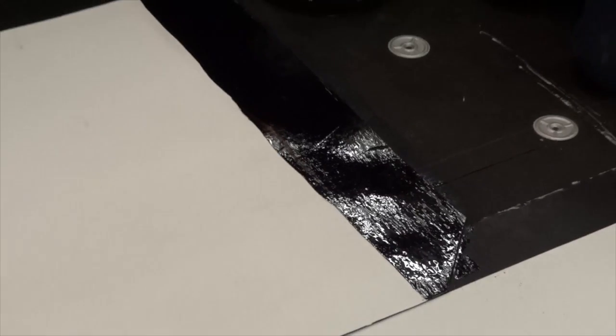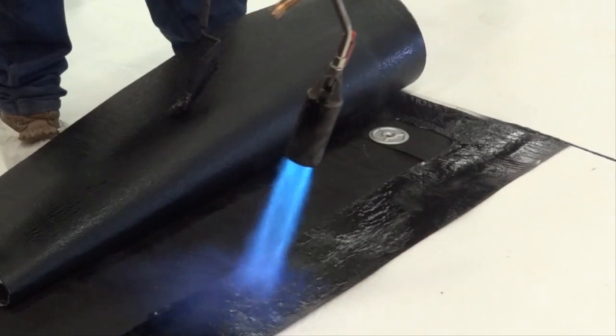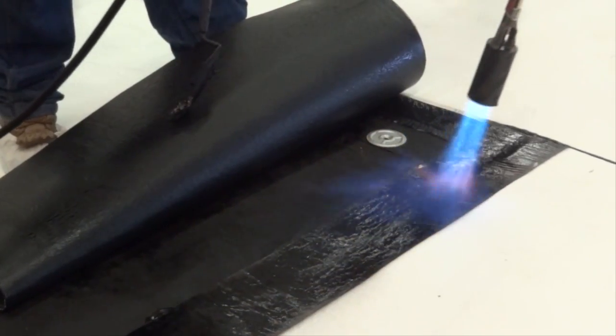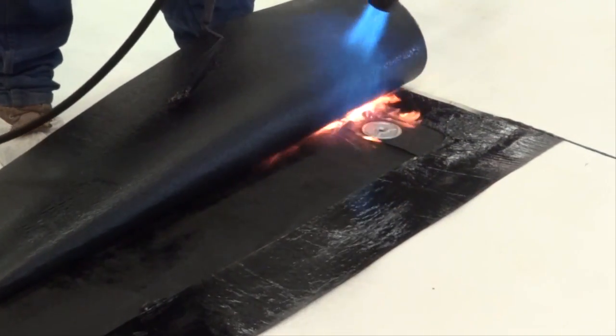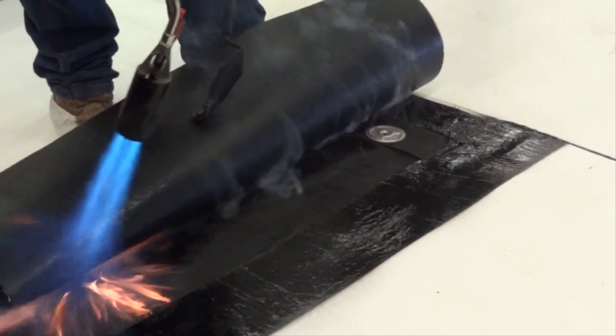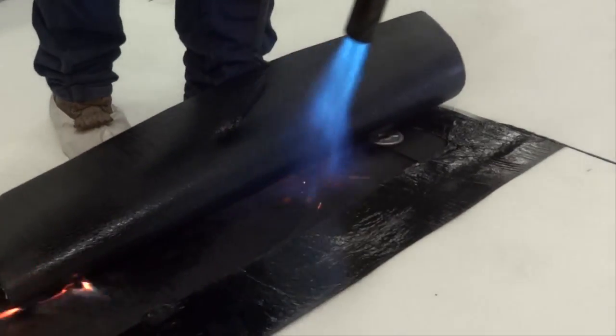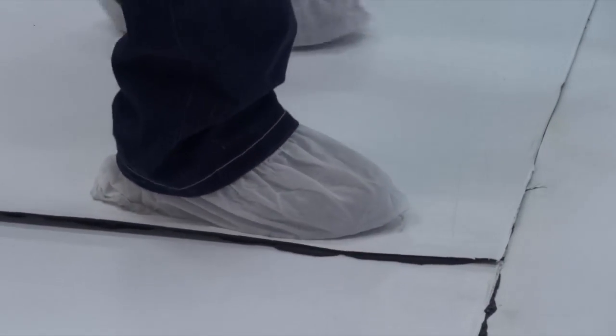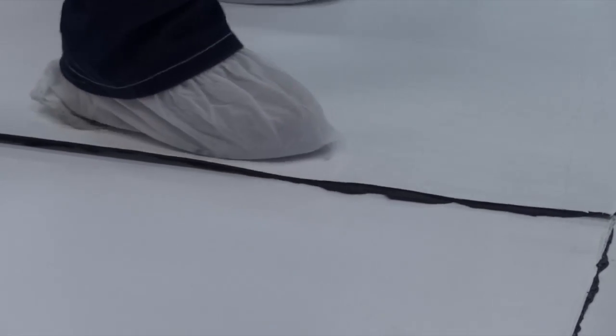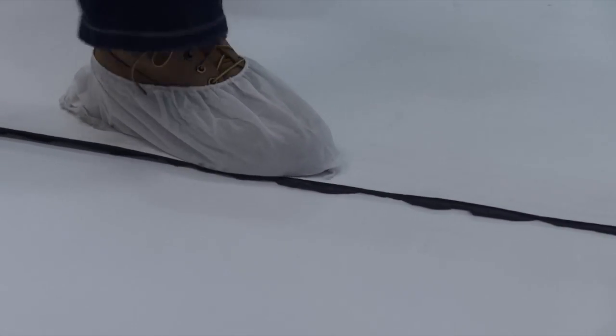After the primer has had time to dry, heat the top of the underlying sheet to soften. Then, heat the underside of the top sheet thoroughly to properly mate the two sheets together. Press or roll into place to ensure proper seam construction and adhesion and achieve the required amount of compound flow-out.